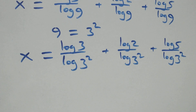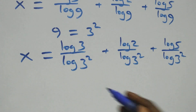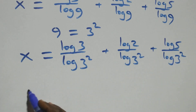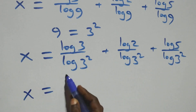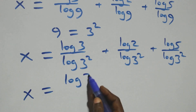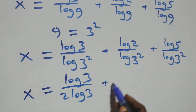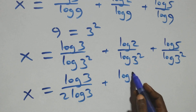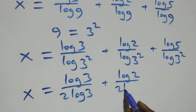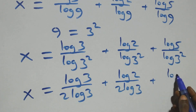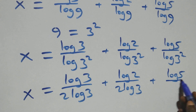Now we apply the power rule of logarithm — the exponent 2 comes to the front — so log(3 squared) becomes 2 log 3. This gives x equals log 3 over (2 log 3) plus log 2 over (2 log 3) plus log 5 over (2 log 3).